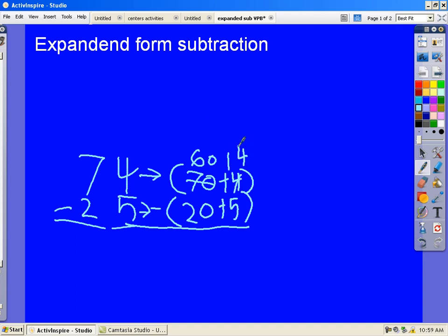14 minus 5 equals 9. 60 minus 20 equals 40. 40 plus 9 equals 49. That's your answer.